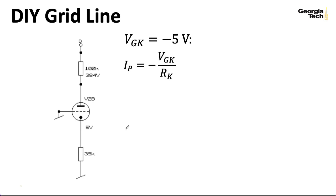Anyway, if we plug in minus 5 volts for our grid-to-cathode voltage and to this kind of formula that we computed previously, we get minus 5 volts over this giant resistor of 39 kiloohms, giving us 0.128 milliamps.